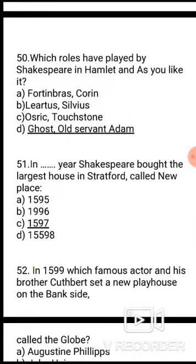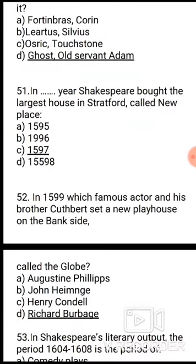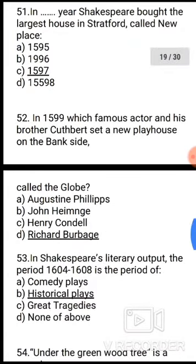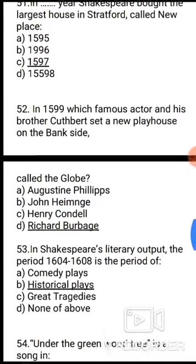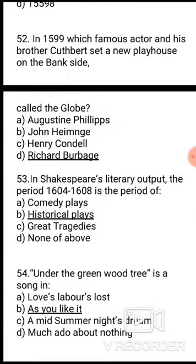Question 51: In which year did Shakespeare buy the largest house in Stratford called New Place? The correct answer is option C, 1597. Question 52: In 1599, which famous actor and his brother Cuthbert set up a new playhouse on the Bankside called the Globe? The correct answer is option D, Richard Burbage.